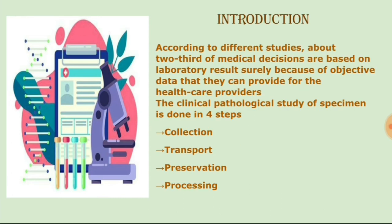According to different studies, about two-thirds of medical decisions are made based on laboratory results, because of the objective data they provide for healthcare providers. Clinical pathology helps in making medical decisions based on lab results, giving us actual data about what is happening inside the patient. The clinical pathological study of a specimen is done in four main steps: collection, transport, preservation, and processing.